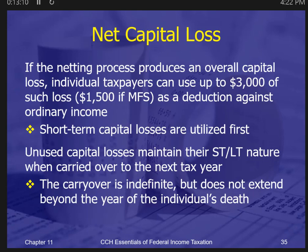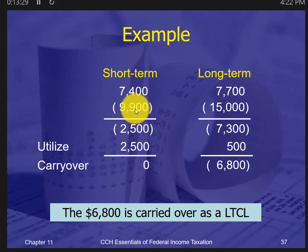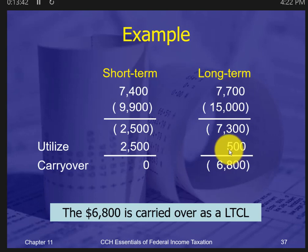On the plus side, capital gains are taxed at a lower rate. On the negative side, capital losses are limited, whereas an ordinary loss would not be. Here's an example: short-term losses are used first — $2,500 of the short-term loss is utilized. Since the total we can use is $3,000, that leaves only $500 for long-term losses. We use $500 now, and the remaining $6,800 carries over to next year and continues to offset capital gains or ordinary income in future years.